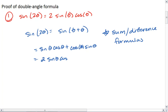Which equals 2 sine theta cosine theta. And that is the proof of our sine double angle identity.